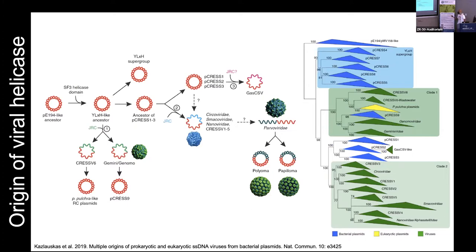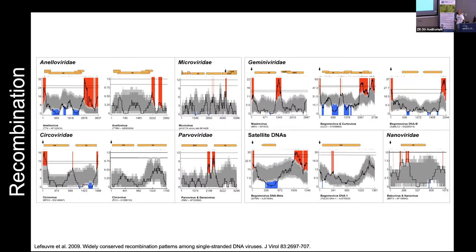A lot of this is theoretical at the moment, but it's based on knowledge of capsid proteins, and we can start building evolutionary origins of some of these single-stranded DNA viruses and also double-stranded DNA viruses. When we look at all these single-stranded DNA viruses, they recombine a lot, and we see recombination hotspots pretty much in non-coding regions, while coding regions show cold spots, showing that it is important through natural selection for coding regions not to be disrupted.